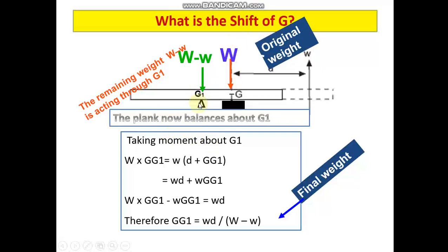If you take moment about G1, we have forces acting W as well as small w. W times GG1 equals small w times the distance d plus GG1. If I take this formula and rearrange, finally I will get an expression: GG1, the distance between old centre of gravity and new centre of gravity, equals small w times d divided by capital W minus small w. Small w is the weight of the removed portion and capital W is the original weight of the object.